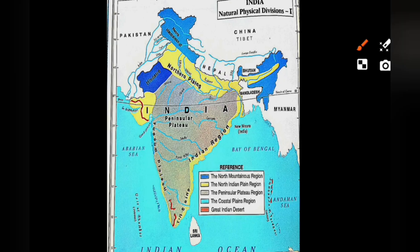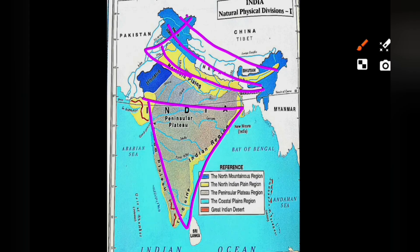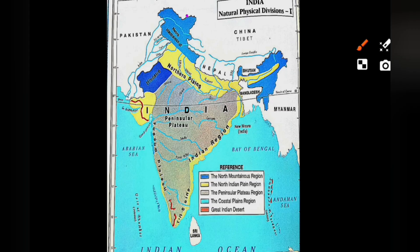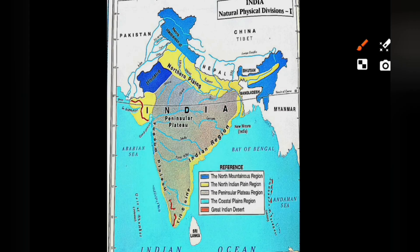The Indian river system is divided into two categories based on origin. Rivers can be classified based on their birthplace into Himalayan rivers and Peninsular rivers. Most Himalayan rivers flow through the northern part of India, while Peninsular rivers mostly flow in the southern part of India.